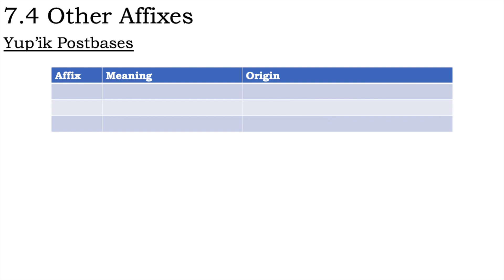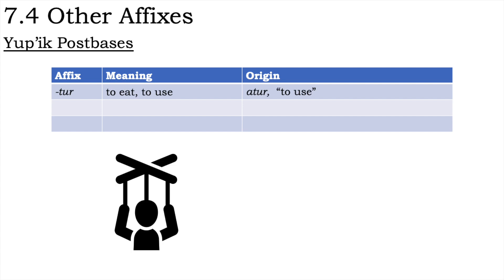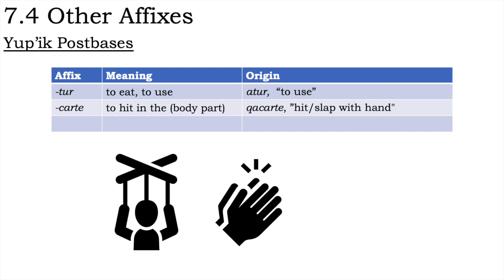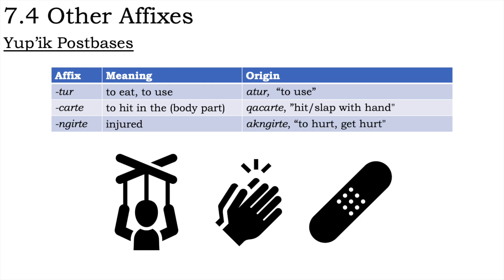Yupik postbases. Most postbases have no known connection to corresponding roots with similar meaning. However, there are a few postbases where the etymology seems clear, and the ultimate origin of most of the root-postbase combinations seems clearly to be from old compounds. A few postbases with identifiable sources are: -tur 'to eat or to use,' from atur 'to use'; -charte 'to hit in the body part,' from acharte 'to hit or slap with the hand'; and -myrte 'injured or to be injured in the body part,' from akmyrte 'to hurt or get hurt.'